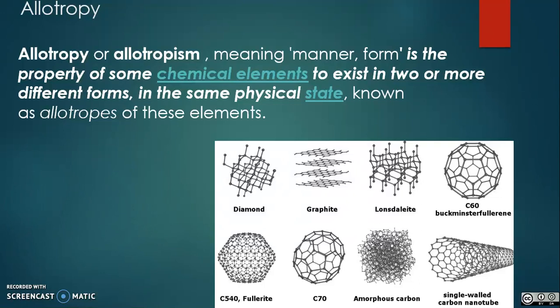The more general term used for any crystalline material is polymorphism. Allotropy refers only to different forms of an element within the same phase. These different states are not themselves considered to be examples of allotropy.